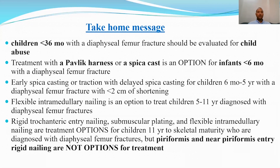Flexible intramedullary nailing is an option for children between 5 to 11 years with diaphyseal femoral fractures. Rigid trochanteric entry nailing, submuscular plating, and flexible intramedullary nailing are treatment options for children 11 years through skeletal maturity; however, piriformis fossa and near-piriformis entry rigid nailing are not treatment options.